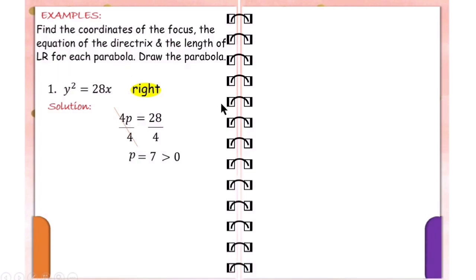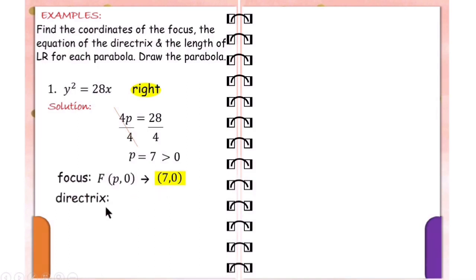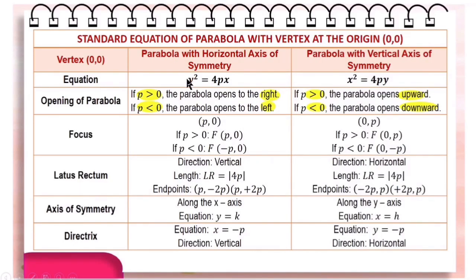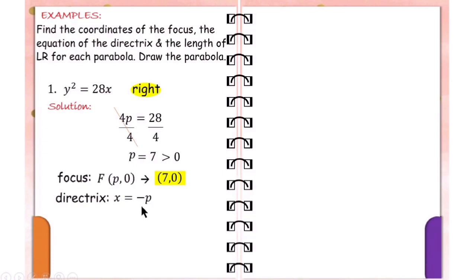Since the parabola opens to the right, the focus is at (p, 0) — the value of p comes first before 0. And because the opening is to the right, p is positive. So the focus is at (7, 0). Next, the equation of the directrix — if it's quadratic in y, the equation of the directrix must be x equals negative p. Since p is 7, the directrix is x equals negative 7.